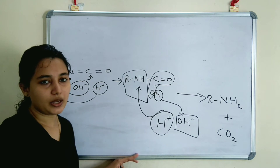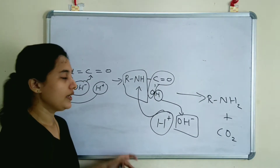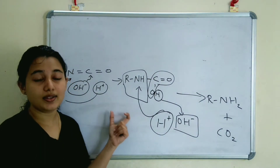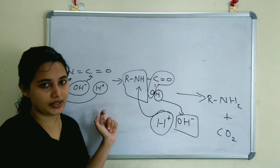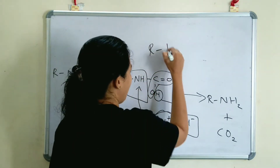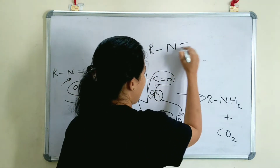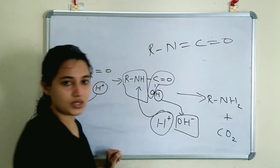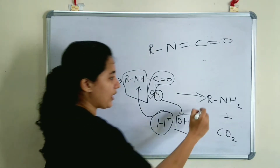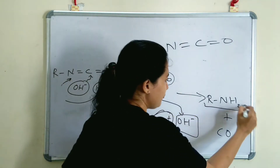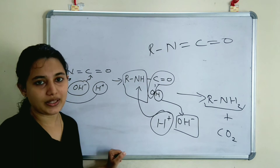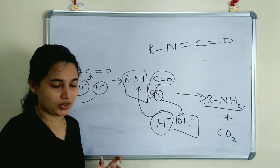So the primary amine is formed via the intermediate called isocyanate (R-N=C=O). This is the mechanism for Hoffman Rearrangement Reaction.